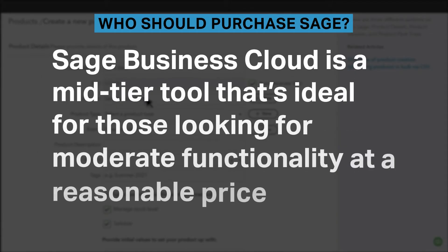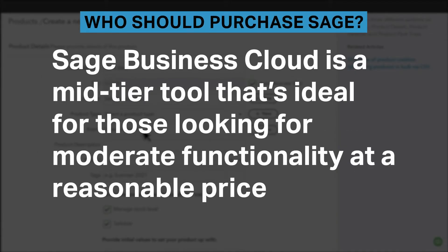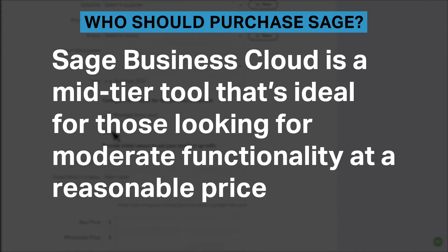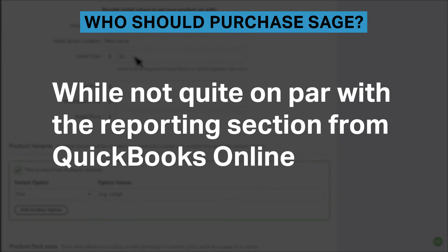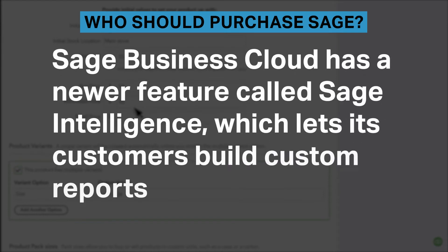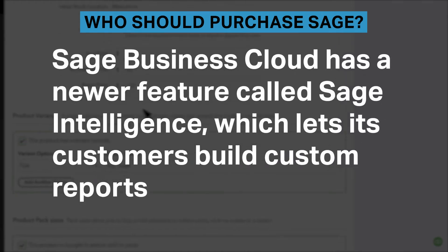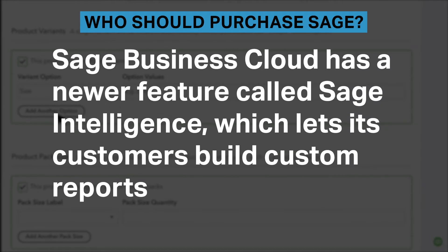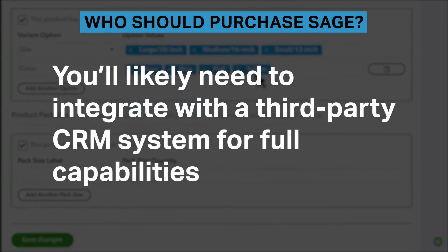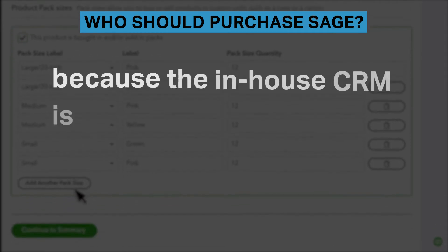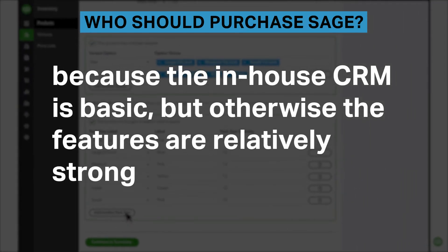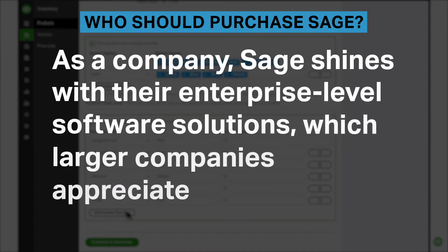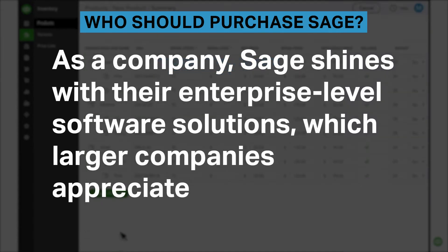Sage Business Cloud is a mid-tier tool that's ideal for those looking for moderate functionality at a reasonable price. While not quite on par with the reporting section from QuickBooks Online, Sage Business Cloud has a newer feature called Sage Intelligence, which lets its customers build custom reports. You'll likely need to integrate with a third-party CRM for full capabilities because the in-house CRM is basic, but otherwise the features are relatively strong. As a company, Sage shines with their enterprise-level software solutions, which larger companies appreciate.